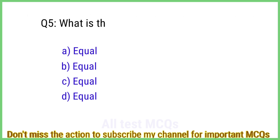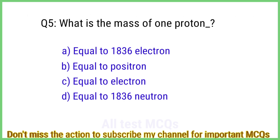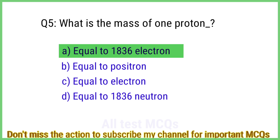Question number 5. What is the mass of one proton? The right answer is option A: equal to 1836 electrons.